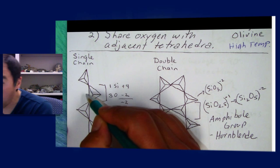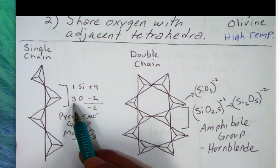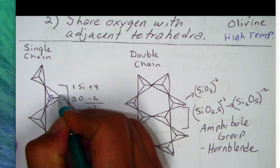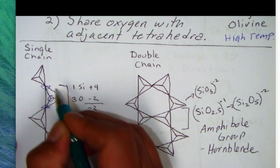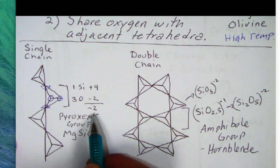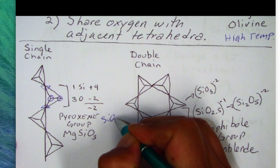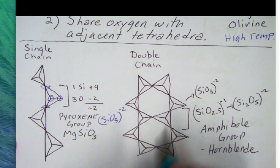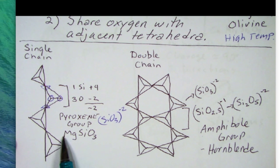If we try to figure out the total valence now, we find one silicon at plus four. Since we're only sharing half of each end oxygen, we effectively have one, two, and a half — so three oxygens total. When I do the math, it comes out to negative two. So this has a formula of SiO3, which is minus two. Now I don't need two magnesiums — magnesium is plus two, so I just need one. This is the formula for the pyroxene group, another very important mafic mineral.